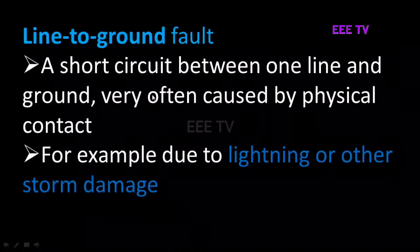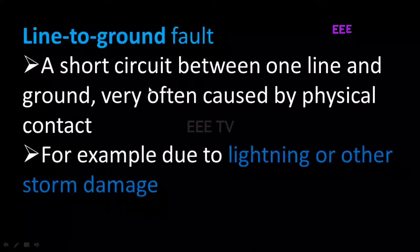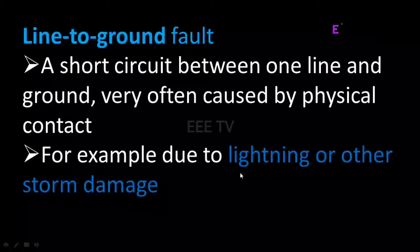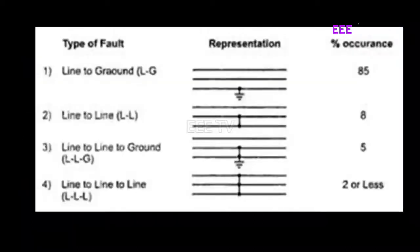Single line to ground fault involves a phase conductor making contact with the ground. For example, lightning striking a line causes a single line to ground fault. This is a single line to ground fault.